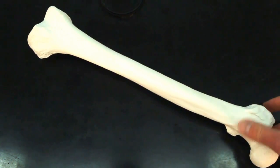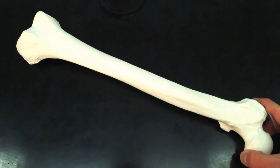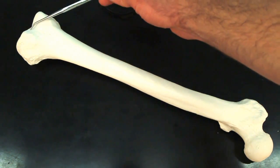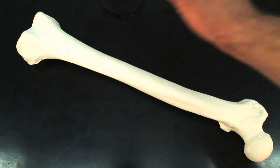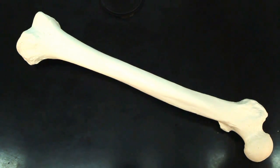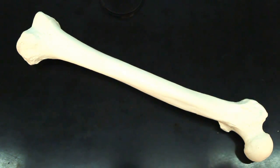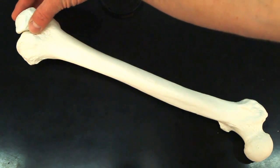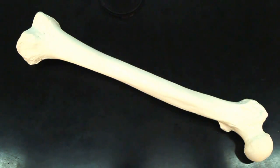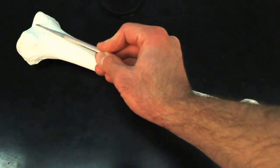If we go back to the anterior side, or the front, we're going to notice this smooth patch right here. That smooth patch is where the patella is going to sit. It's where the patella can sit and ride on the knee, the smooth patellar surface.